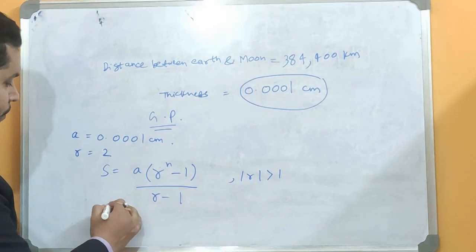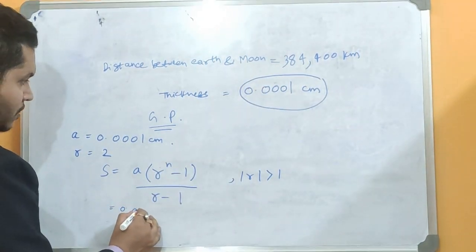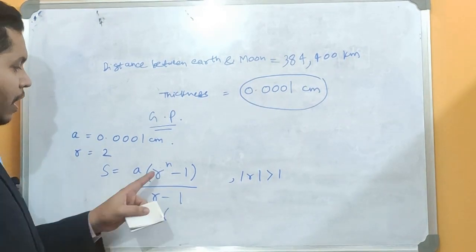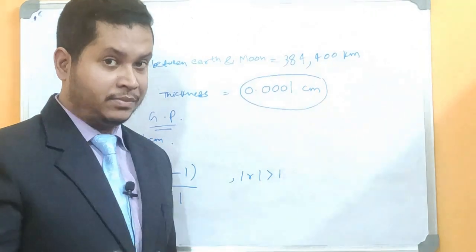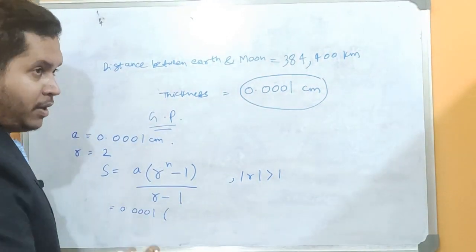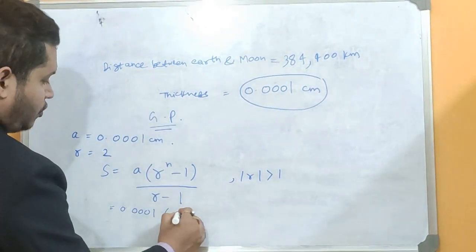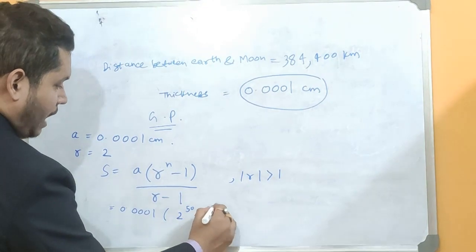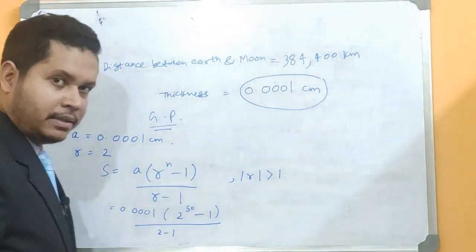So let's substitute the values. So the first term is how much? 0.0001 into R to the power n. And how many times? 50 times. That means here my n is 50. Right? Because I am finding the sum of the first 50 terms. So r to the power 50, that means 2 to the power of 50, minus 1, divided by 2 minus 1. Now calculate this.